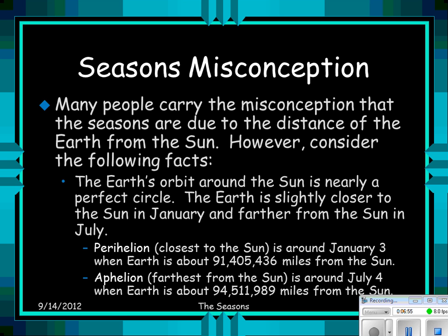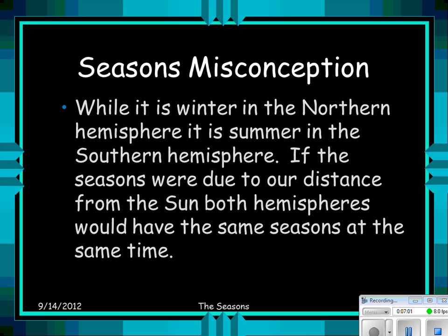So really, if it was about distance, that's the complete opposite of what we'd expect — it can't possibly be right. While it is winter in the Northern Hemisphere, it is summer in the Southern Hemisphere. If the seasons were due to our distance from the Sun, both hemispheres would have the same seasons at the same time.